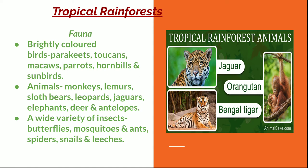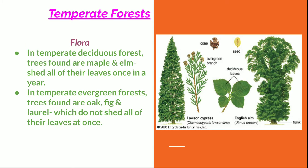Next we come to the temperate forest. I told you temperate forests are of two types: deciduous and evergreen. In the temperate deciduous forest, trees like maple and elm are found, which shed all their leaves once a year. Whereas in the temperate evergreen forest, trees like oak, fig and laurel are found, which do not shed all their leaves at once, because they are evergreen.